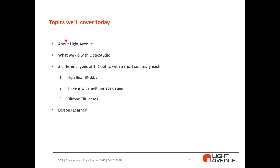The topics we'll cover today are a short introduction about the company Light Avenue and what we do with CMAX. At the third point, I want to show you three different types of TRR optics: the first is the high flux TRR LEDs, the second is a TRR lens with multi-surface custom design, and the third is silicon TRR lenses — one with ±5 degrees and one with ±10 degrees radiation angle. At the end, we have a short lessons learned.